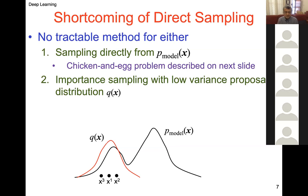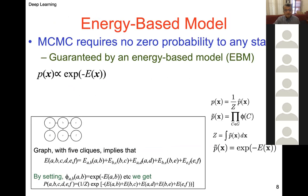We would like samples to go across and give us samples from every possible face or handwritten digit, not just focus on one. To define Markov Chain Monte Carlo, we invoke the energy-based model — the kind of distribution we need to sample from. MCMC requires no zero probability to any state. A state is an assignment to all the variables in the model. MCMC requires that no state has zero probability, and that is guaranteed by an energy-based model: p(x) is proportional to exponential of negative E(x).